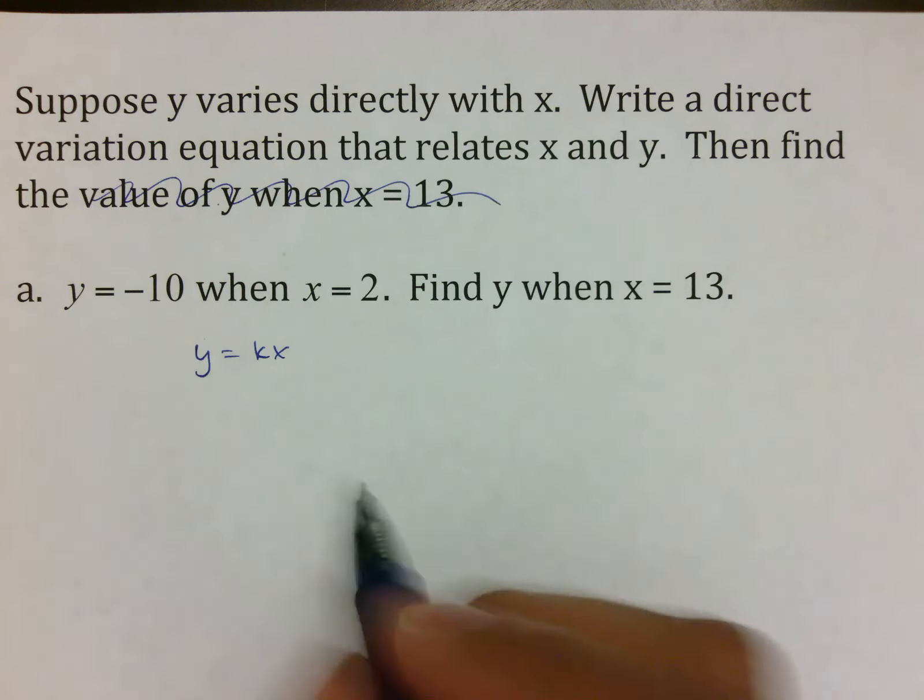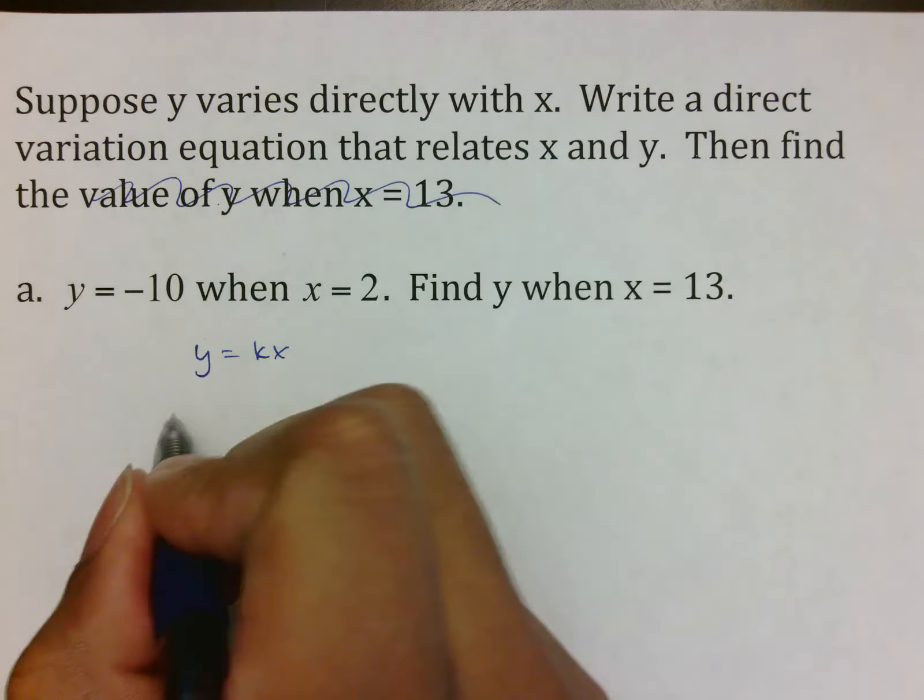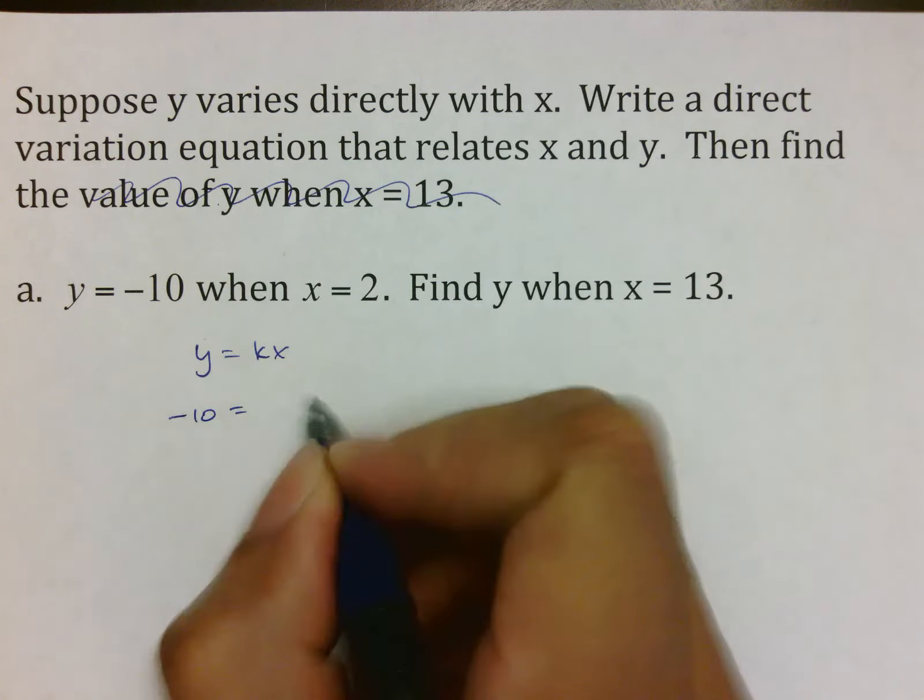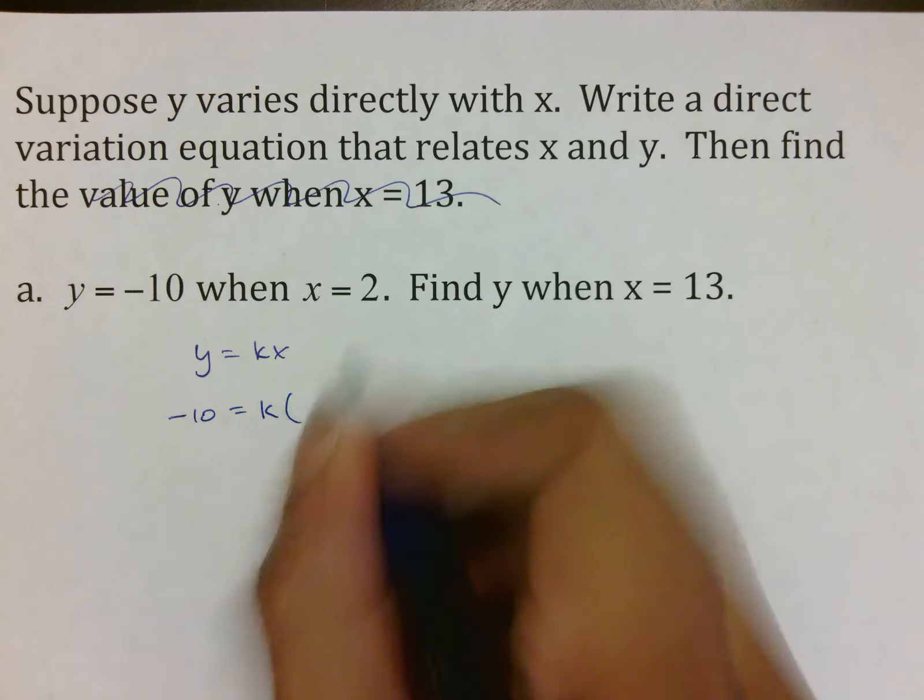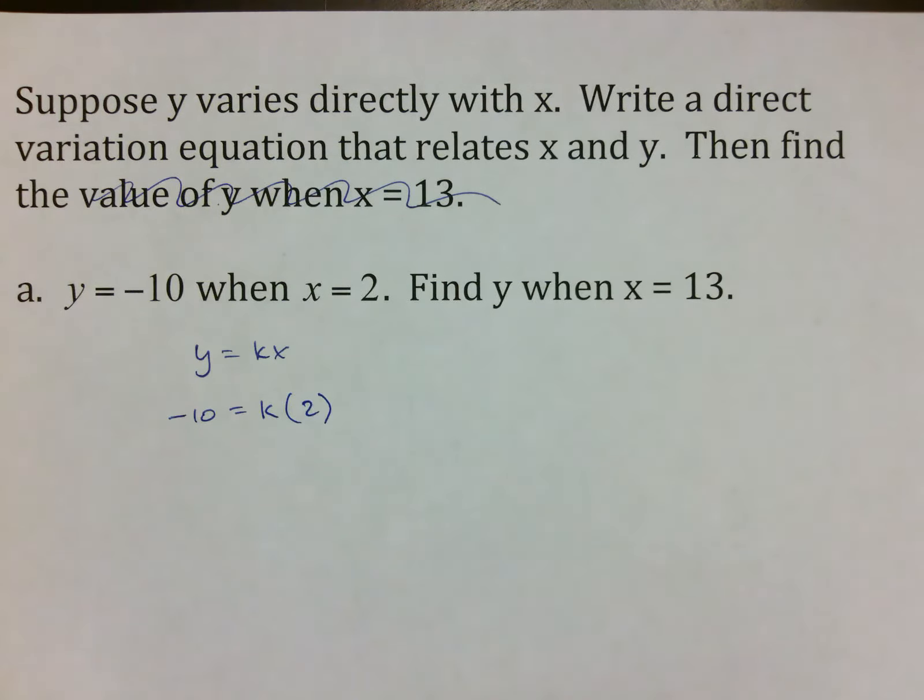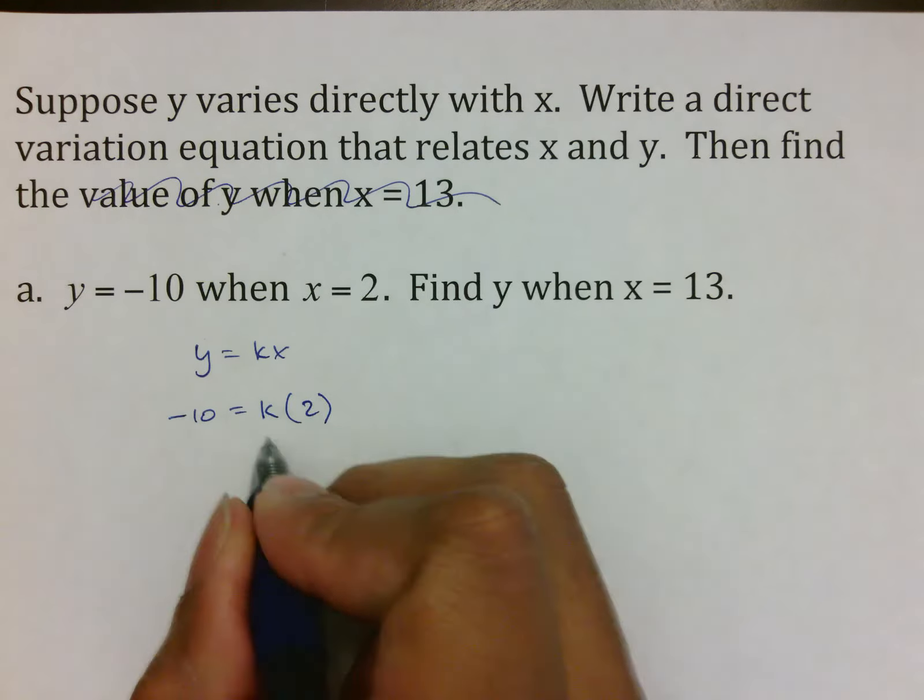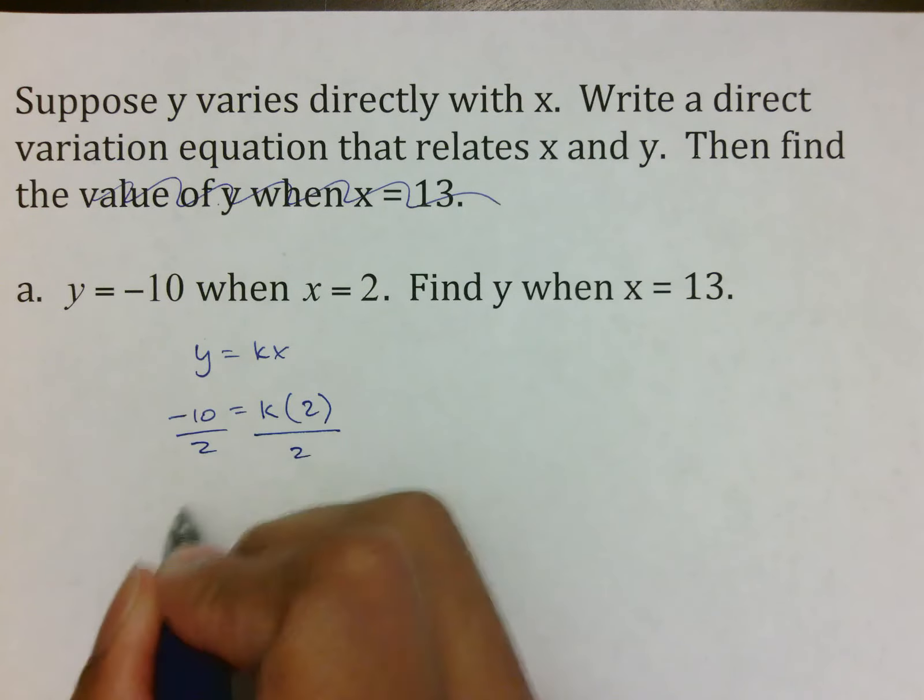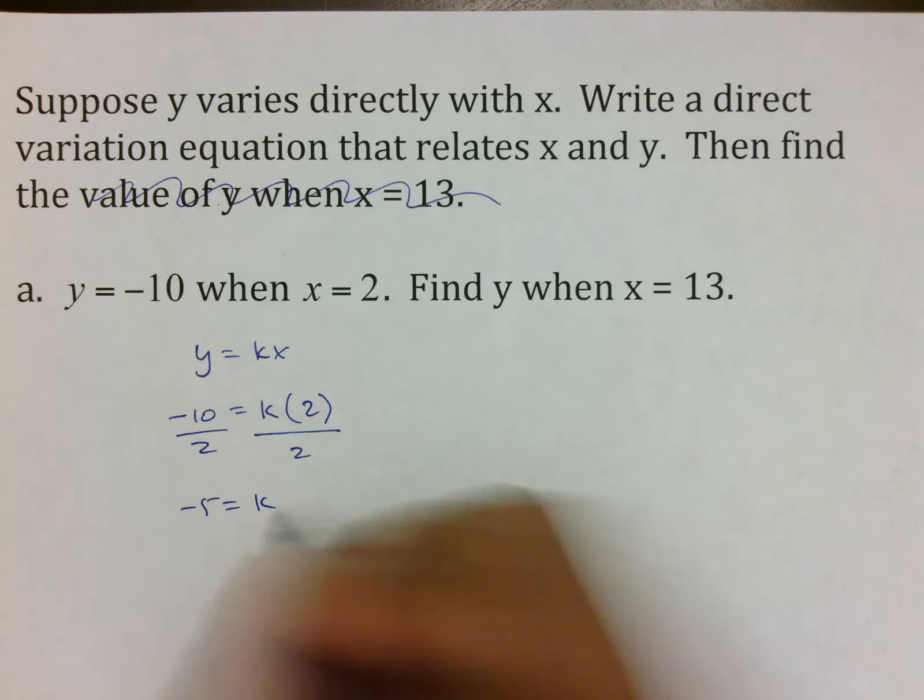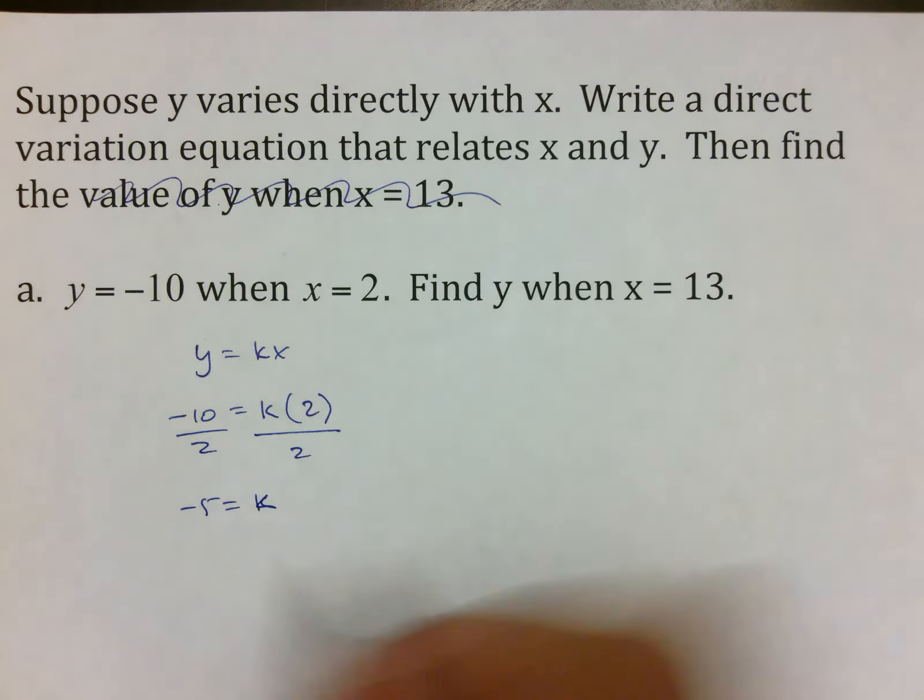The second thing you're going to do is substitute what you know, kind of like what we did in chapter 4. So we're going to put -10 in for y. We're going to bring down our k. We're going to put 2 in for x. We are going to solve for k. Because remember, our first job is to find k. So we divide by 2. We divide by 2. We get -5 for k. That means that in this situation, our constant of variation is -5.